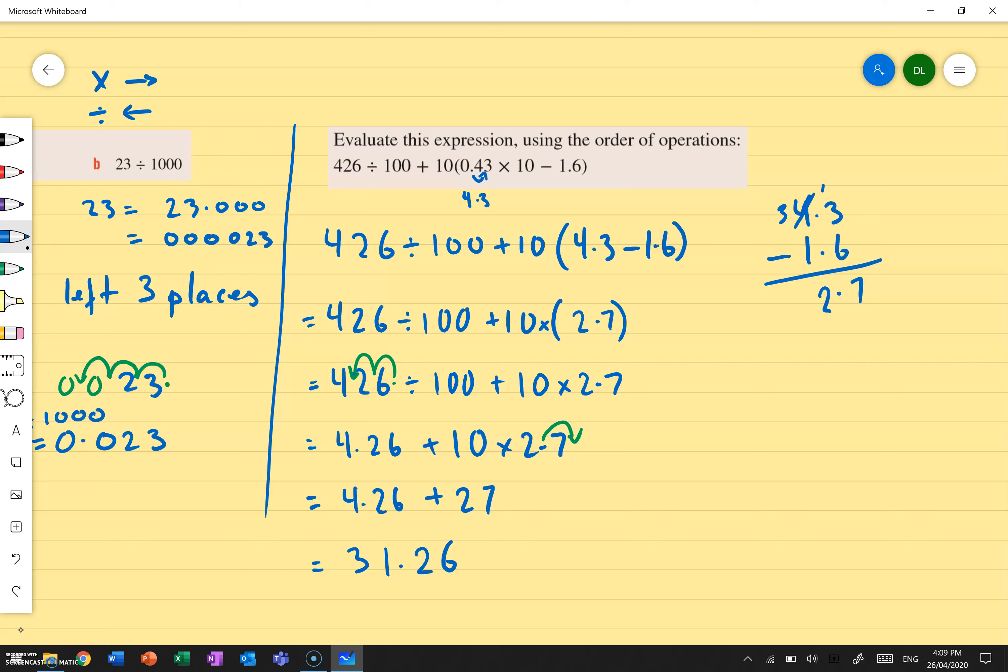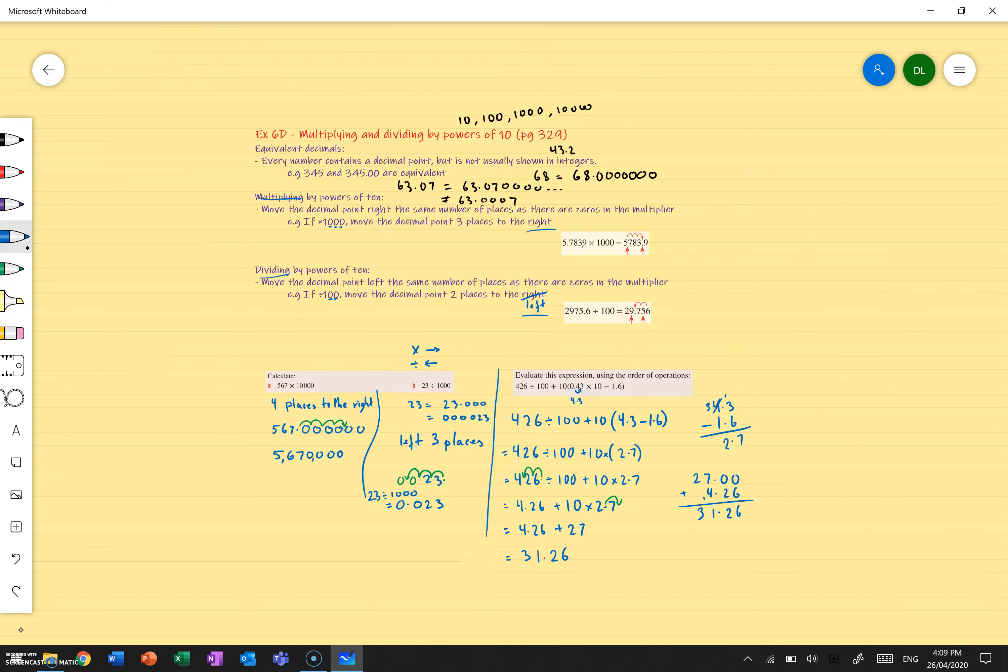And I get 31.26. Or if you're doing it by hand, you could say 27.00, because that's the same thing, plus 4.26. 0 plus 6 gives me 6. 0 plus 2 gives me 2. 7 plus 4 gives me 11, so 1. And the 2 plus 1 gives me 3. So I get 31.26. Hopefully that makes a bit of sense. Feel free to pause the video at any time. Good luck.